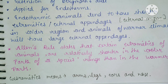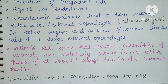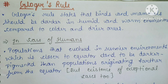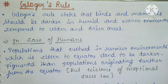So for Allen's rule: endothermic animals with short external appendages are in colder regions, and animals with large external appendages are in warmer climates.